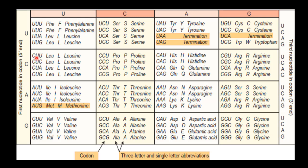This is called multiple coding, that is degenerate coding. For example, valine is produced by four codons. Thank you, students. We will meet again in the next discussion. Thank you.